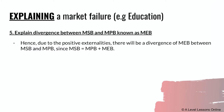Next, explain the divergence between MSB and MPB, known as MEB. The formula is: MSB = MPB + MEB. The marginal private benefit plus the marginal external benefit to third parties equals the societal benefit. Due to positive externalities, there will be a divergence between MSB and MPB, since MSB = MPB + MEB.